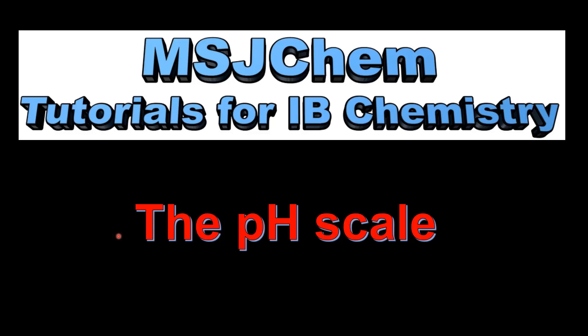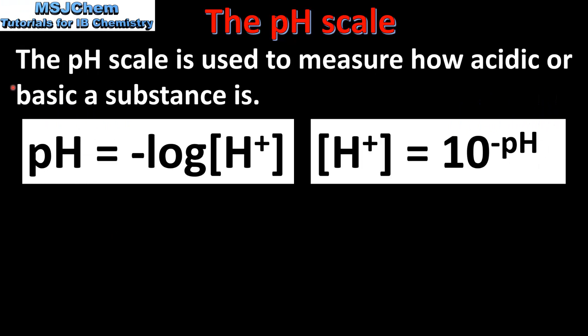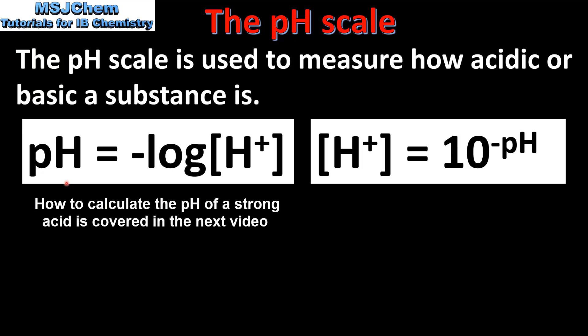This is MSJChem. In this video I'll be looking at the pH scale. The pH scale is used to measure how acidic or basic a substance is. The pH of a substance is equal to the negative log of its hydrogen ion concentration.